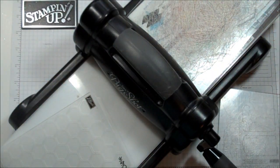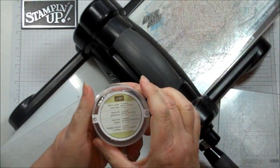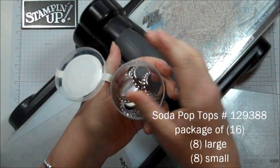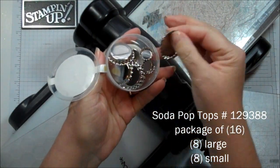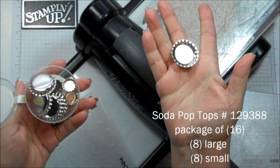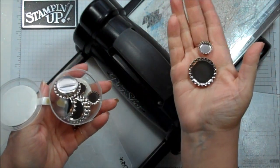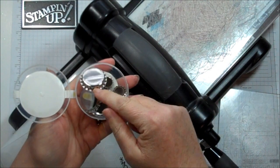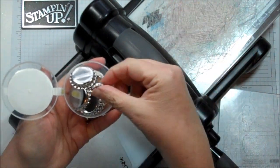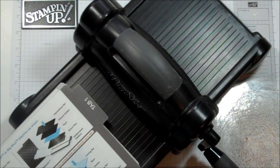Okay, so now we're going to use the brand new silver soda pop tops. These are so cute. They're really a real pop top, and there's two sizes, so you get a total of 16. You get 8 of the large and 8 of the small, but we're going to use the large one.